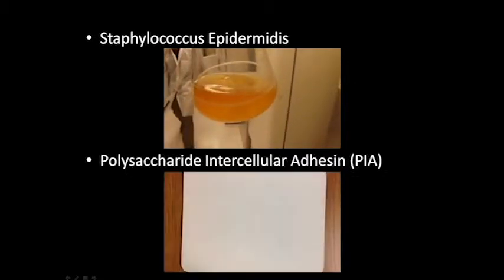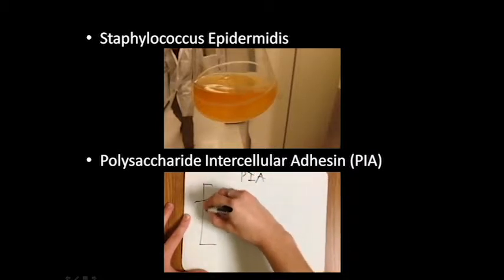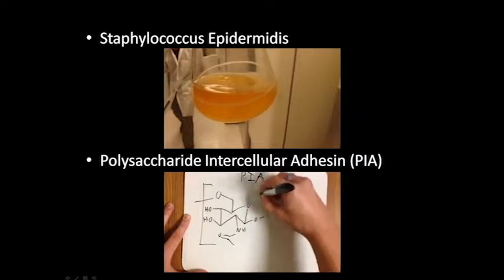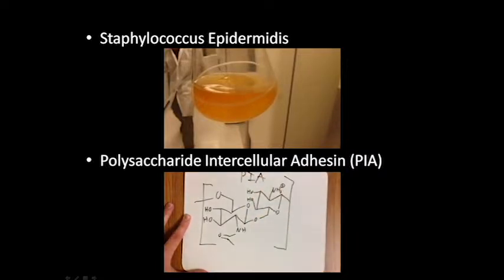I was interested in comparing different protocols for extracting a specific compound, PIA, from the biofilms grown in the lab. Polysaccharide intercellular adhesion is a charged polymer made up of glucosamine monomers. It is a key component for the structure of the biofilm.